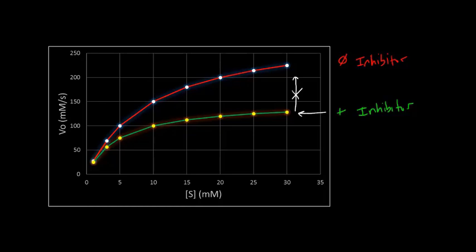So we have a decreased Vmax. So our Vmax here for the absence of an inhibitor is up around 250. But in the presence of an inhibitor, we're down at around 125. So we have a smaller Vmax.